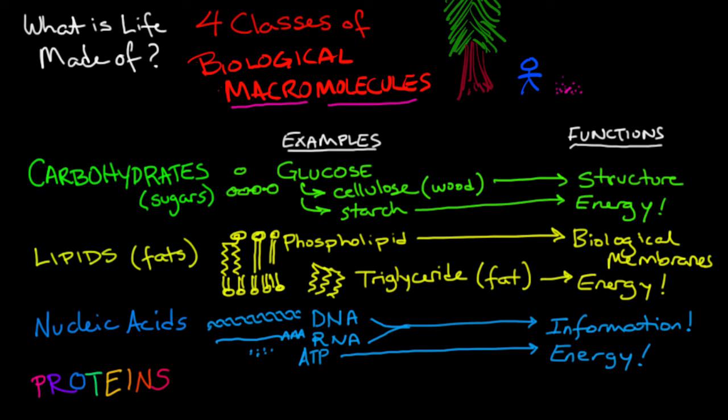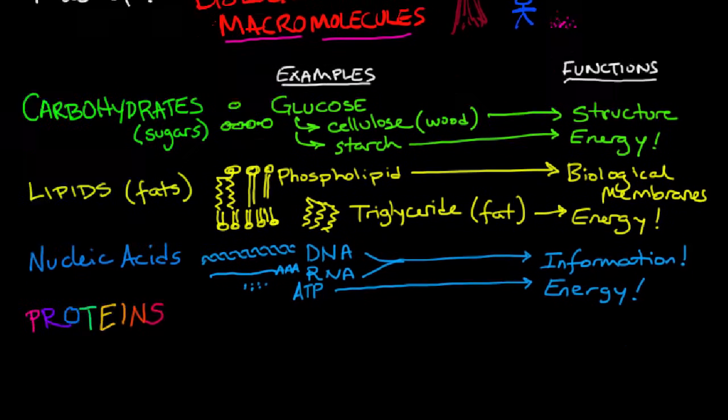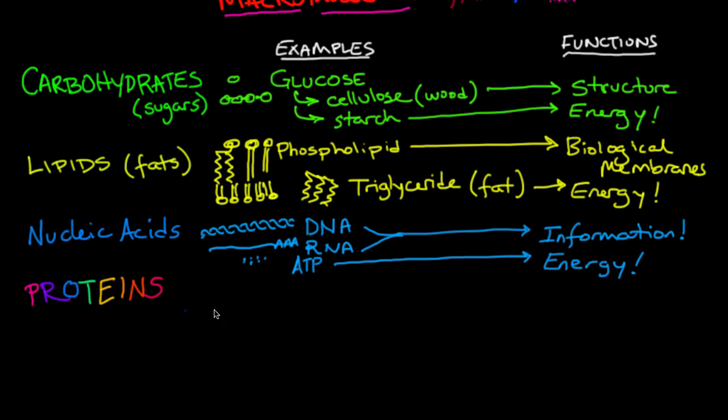Now the fourth class of biological macromolecule, the proteins, I'm going to move this to give us a little more room, have many more structures because their subunits have many, many structures. The subunits of a protein are called amino acids, and amino acids have different chemical properties.